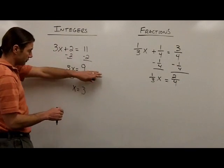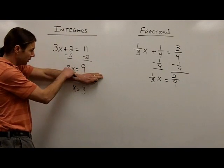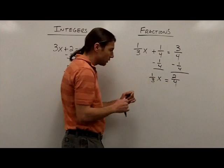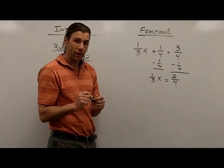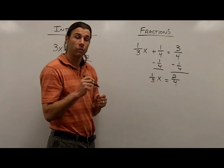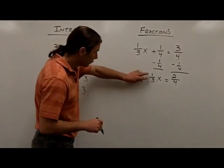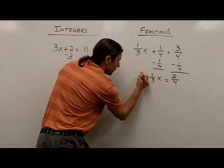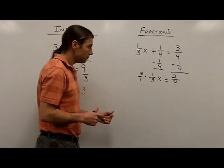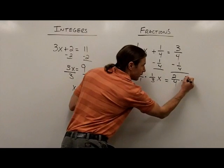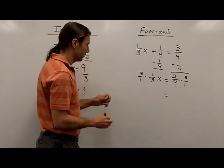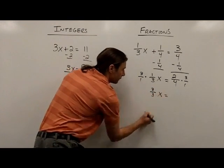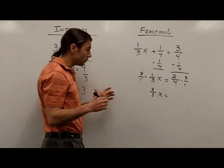Back in the integer problem, when I had 3x equal to 9, I had to undo the multiplication by 3. Very similar here — I need to undo multiplication by 1/3. However, when we deal with fractions, we don't undo multiplication with division. Instead, we multiply by the reciprocal of the fraction. The reciprocal of 1/3 is 3 over 1, so I multiply both sides by 3/1. On the left side, I get 3 over 3, which equals 1.